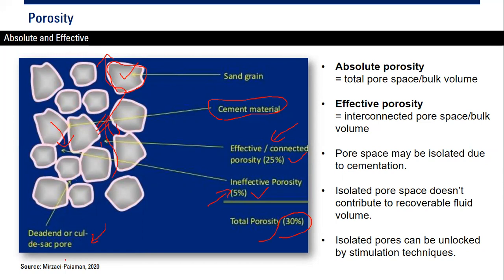We also have dead-end or cul-de-sac pores. Absolute porosity is the total pore space divided by bulk volume. Effective porosity is the interconnected pore space divided by bulk volume. Pore space may be isolated due to cementation, where cement covers rock grains and joins them, creating isolated pores.